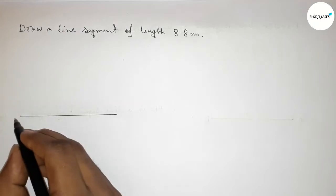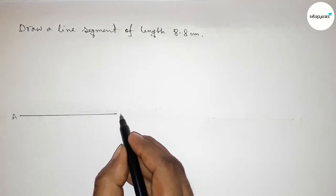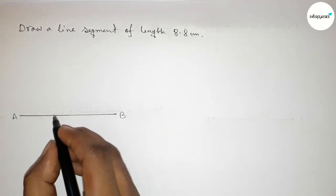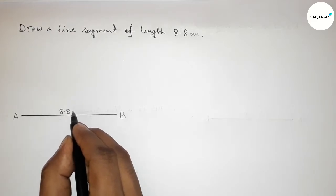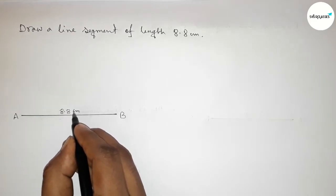Next, taking here point A and here B, so AB is a line segment of length 8.8 centimeters.